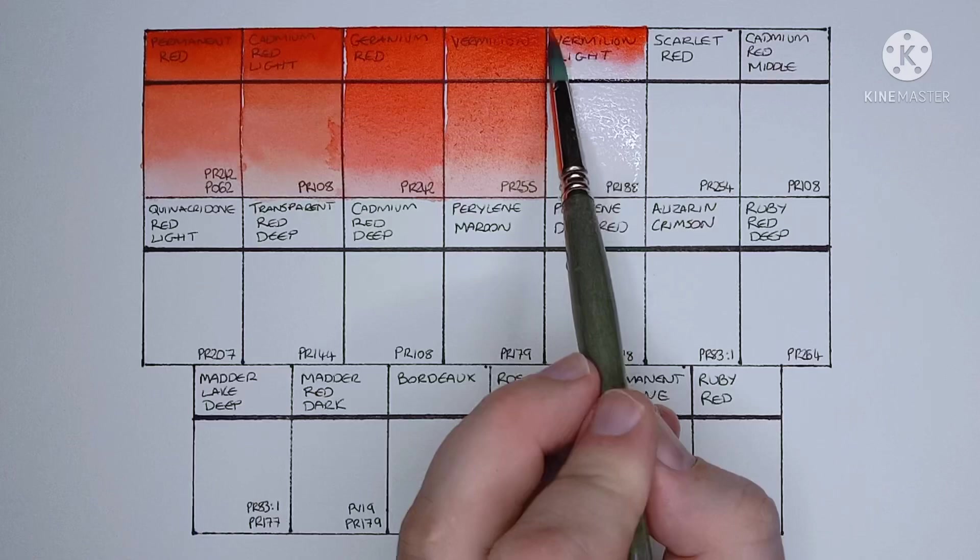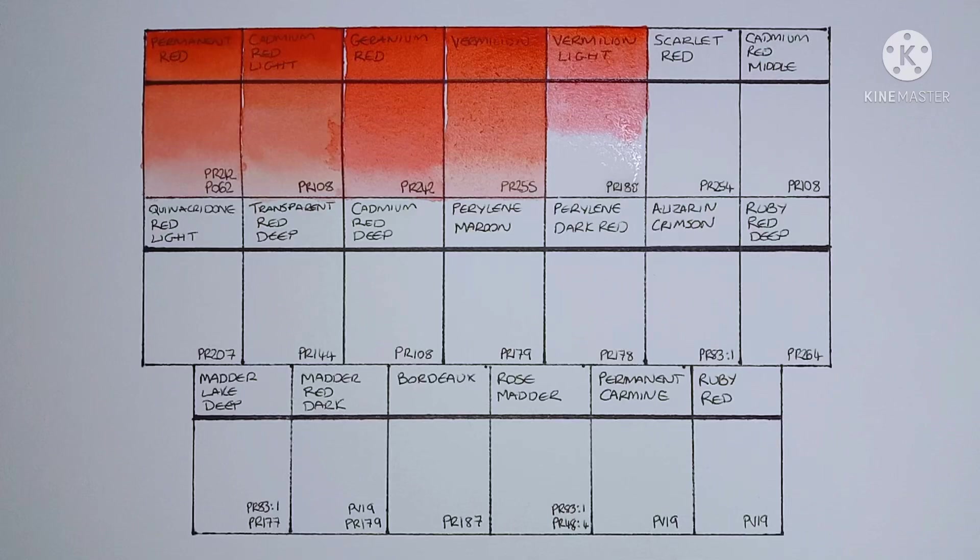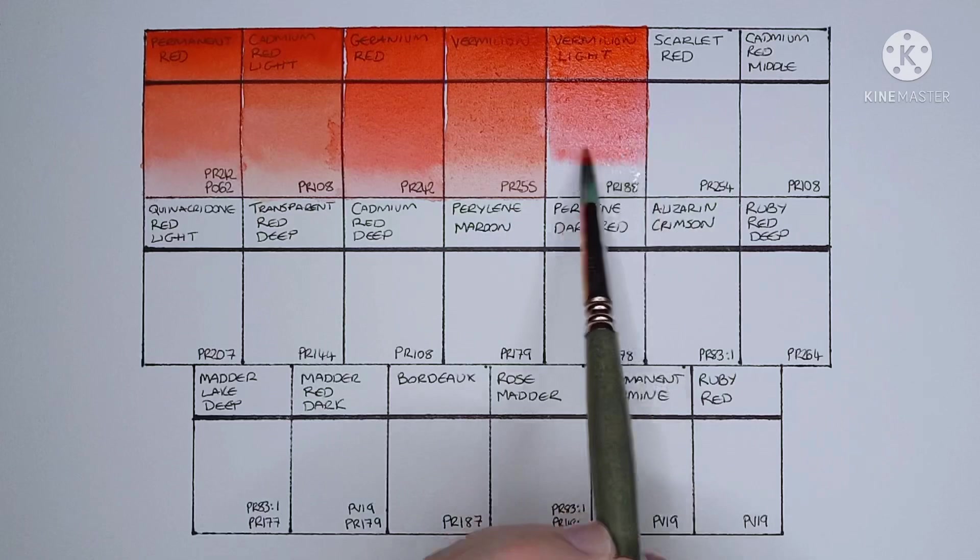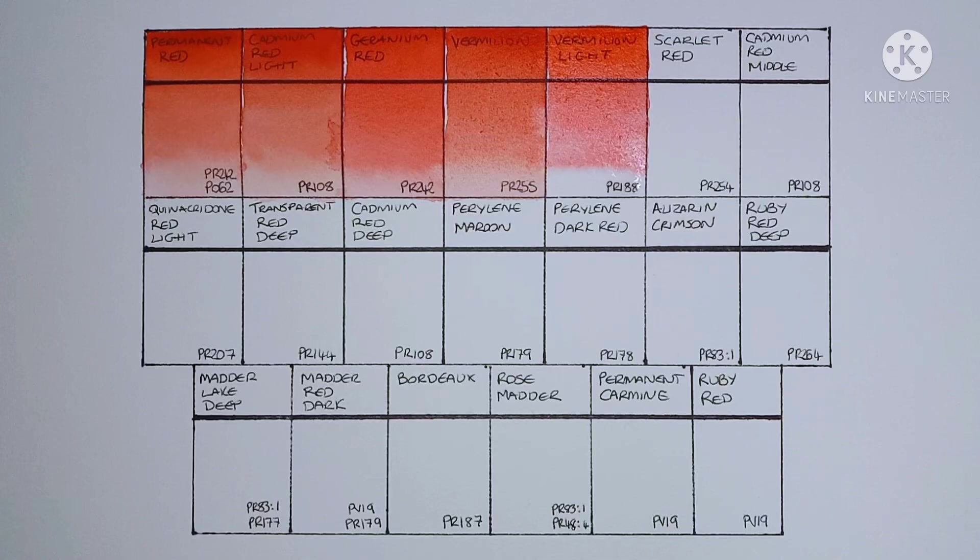Next we have vermilion light, and this one is PR188. I'm not sure if I've ever tried this pigment before. The color itself, yeah, it's okay. It kind of has more of like a coral undertone, whereas the vermilion itself has more of an orange undertone.